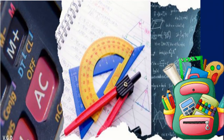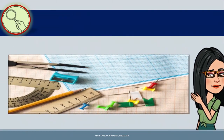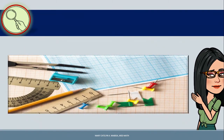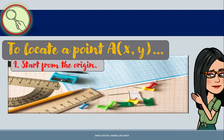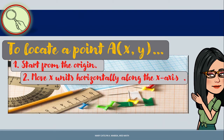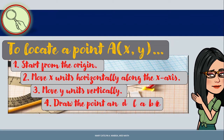In this lesson, you will locate the position of points in the coordinate plane. Now, question: how do you locate a point? To locate a point A with coordinates (X, Y), do the following: start from the origin, move X units horizontally along the X-axis, move Y units vertically, then draw the point and label it A.